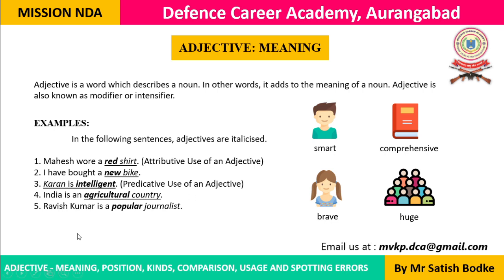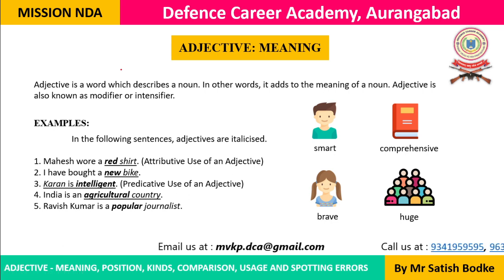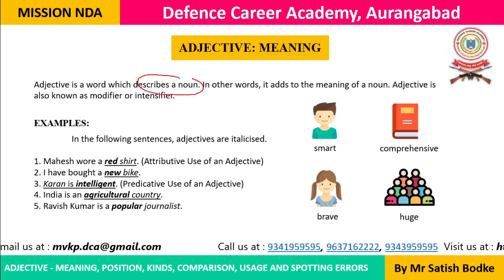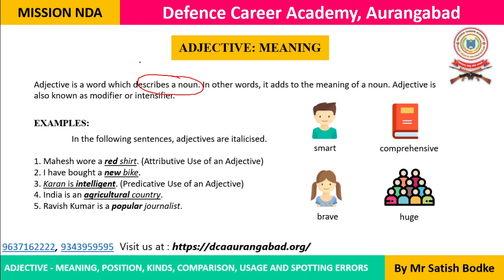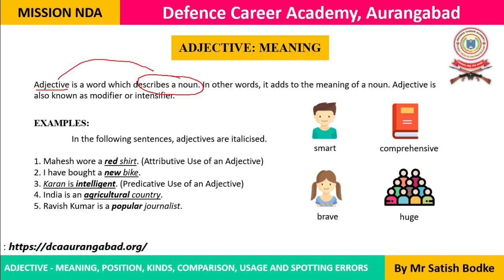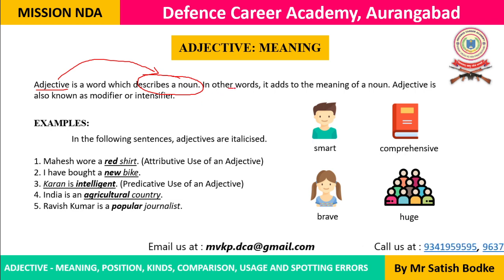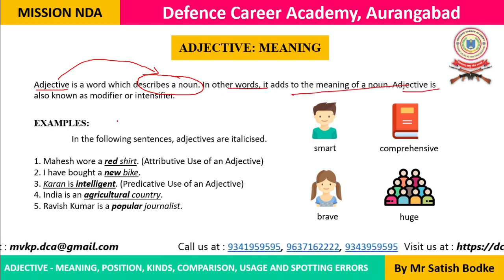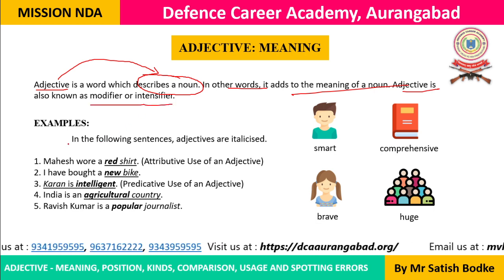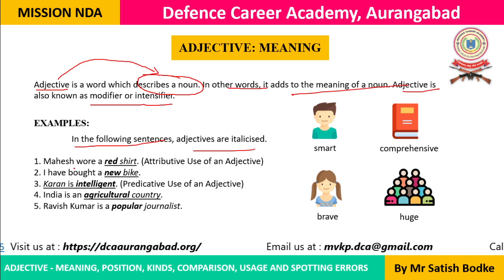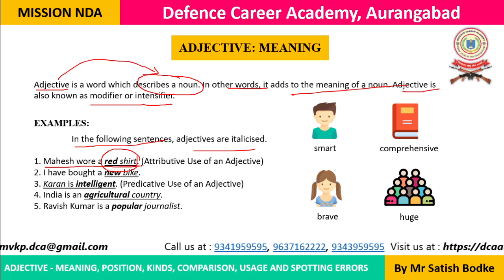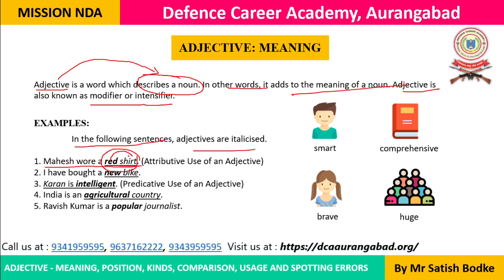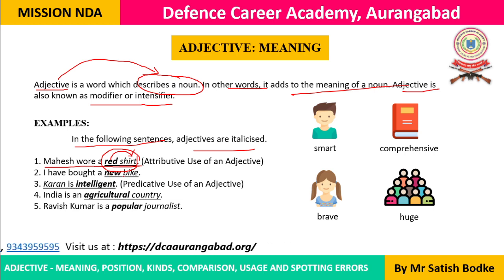First, let us look at the meaning of adjectives. An adjective is a word that describes a noun — it modifies the meaning of a noun, which is why it is also known as a noun modifier. For example, 'a beautiful flower': flower is a noun and beautiful is the word modifying it. In 'Mahesh wore a red shirt', shirt is the noun and red is the adjective modifying its meaning. What kind of shirt? A red shirt.